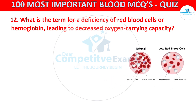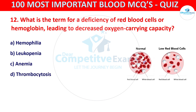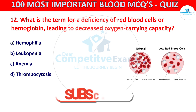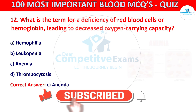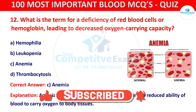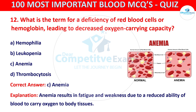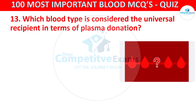Your options are hemophilia, leukopenia, anemia, or thrombocytosis. The correct answer is C, that is anemia. Anemia results in fatigue and weakness due to a reduced ability of blood to carry oxygen to body tissues. Question number thirteen: which blood type is considered the universal recipient in terms of plasma donation?